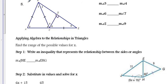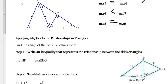For number 5, you're using all of the triangles within the big triangle to compare the angles. You should have said 3 is equal to 4, 6 is less than 7, and 2 is equal to 9.